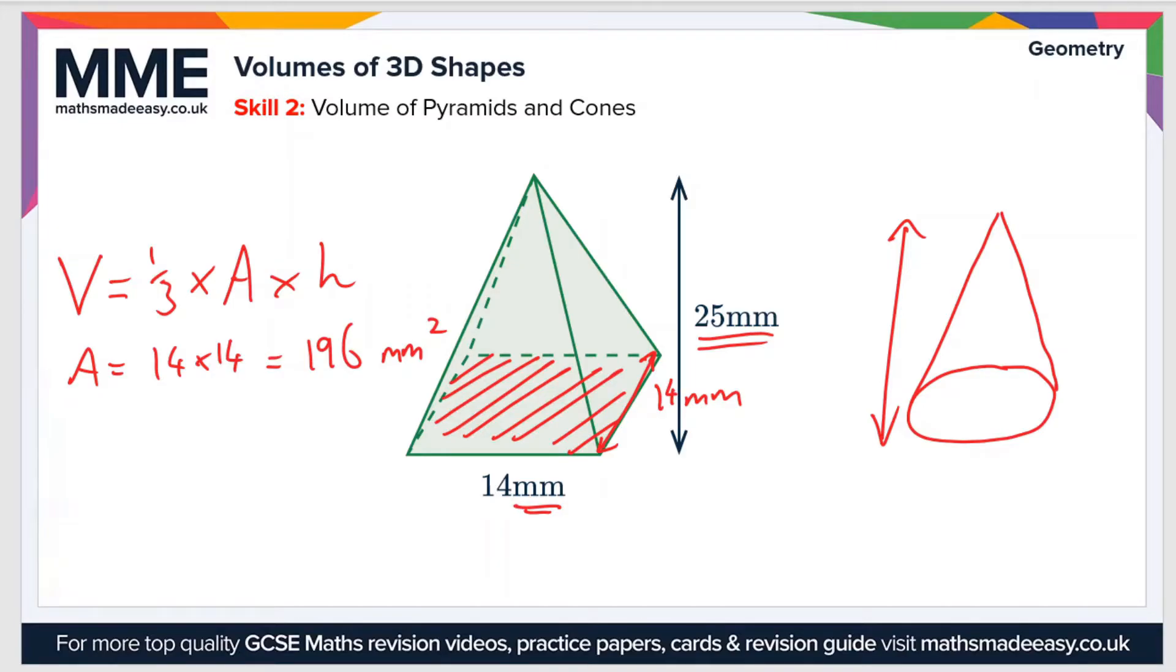And then all we do to find the volume is we times our value of 196 by 1/3 and by the vertical height. And if we do all that, it gives us a value of 1633.3 millimeters cubed in this case.